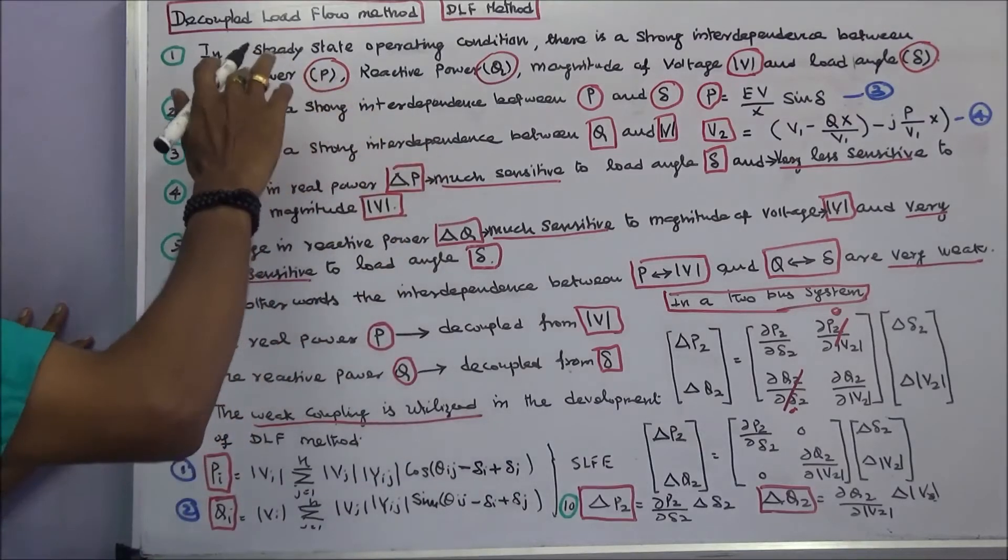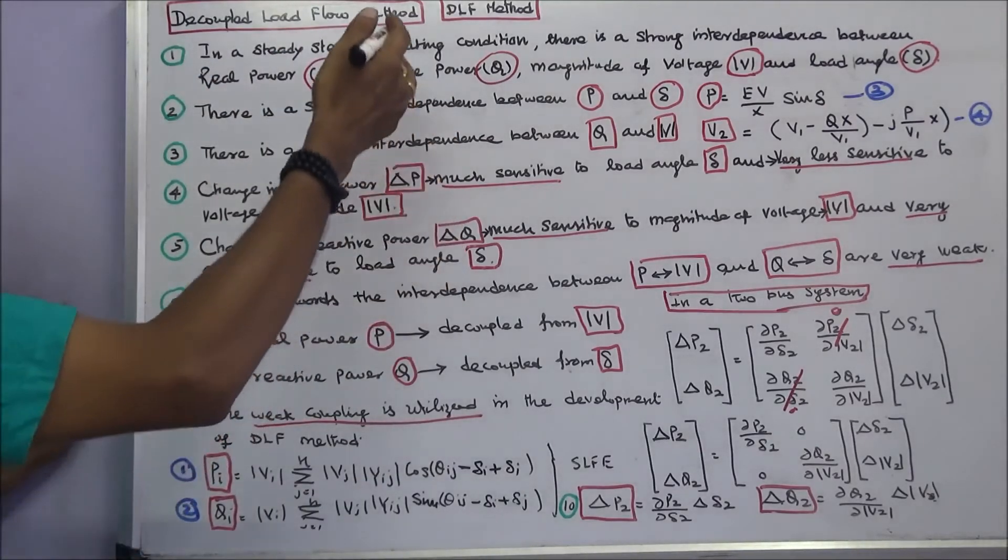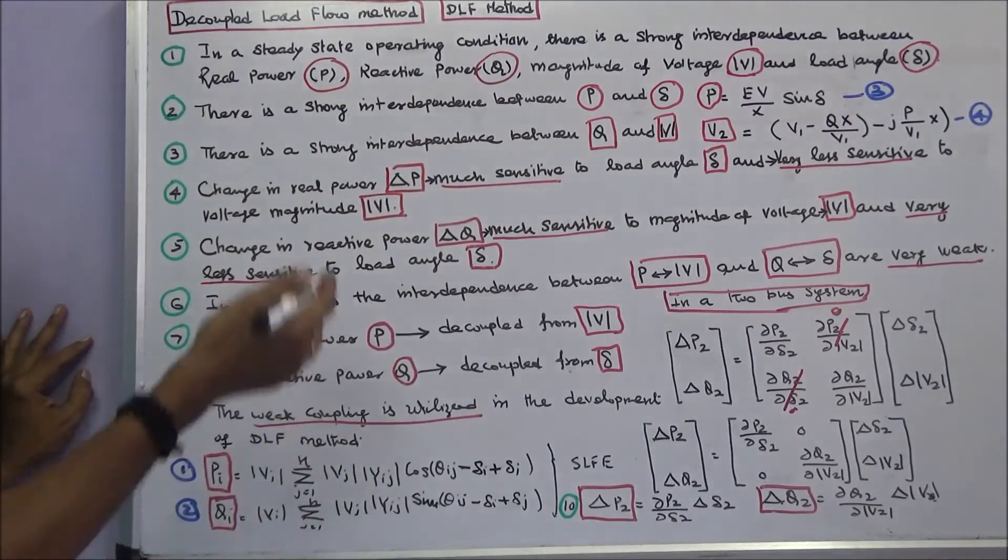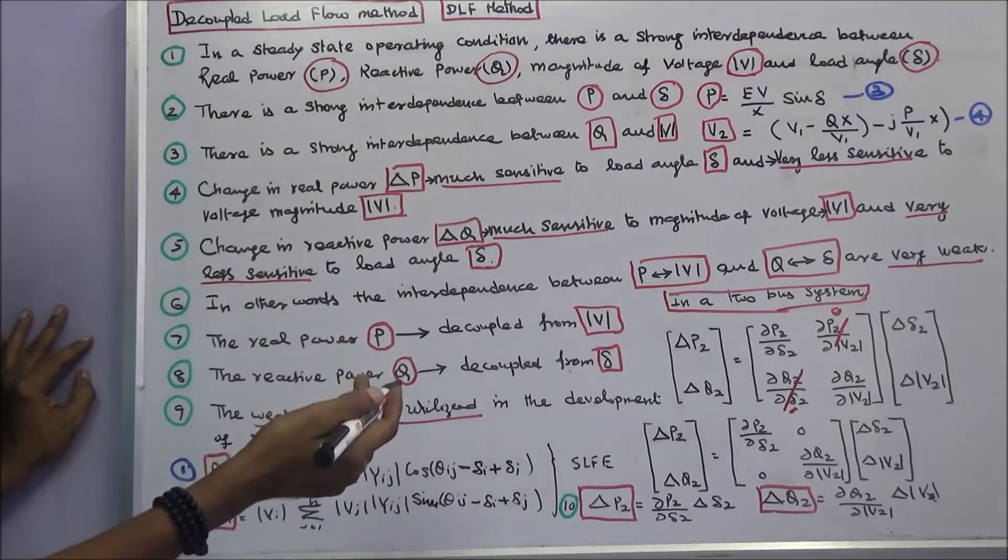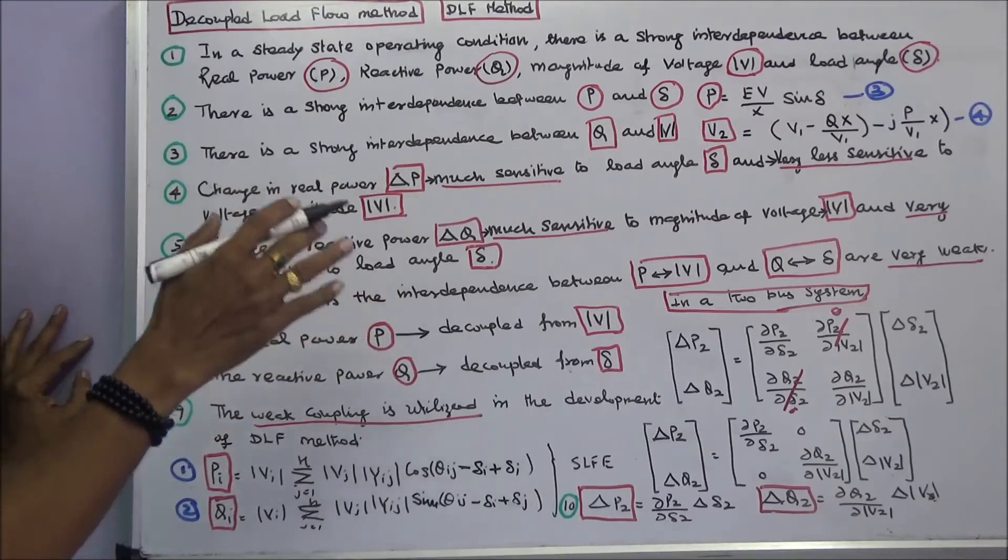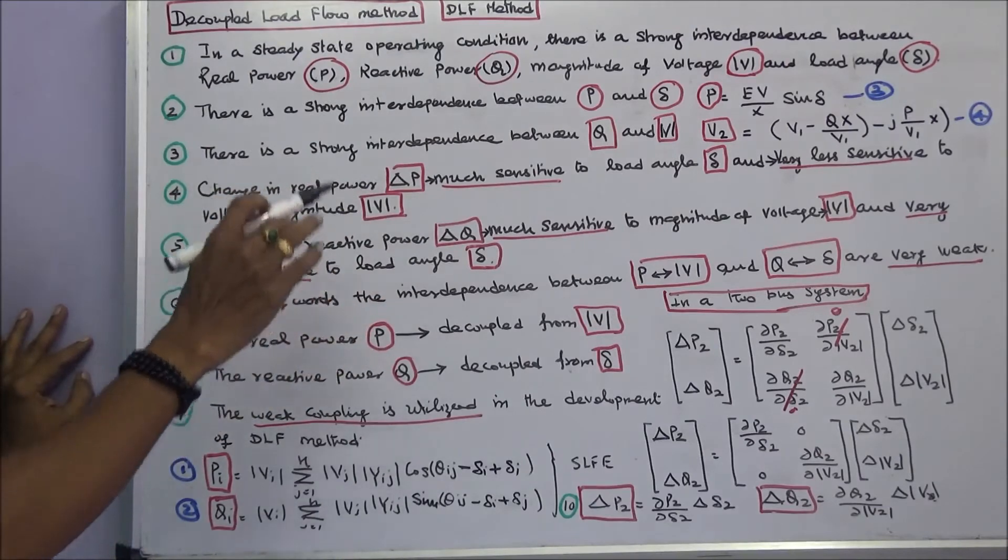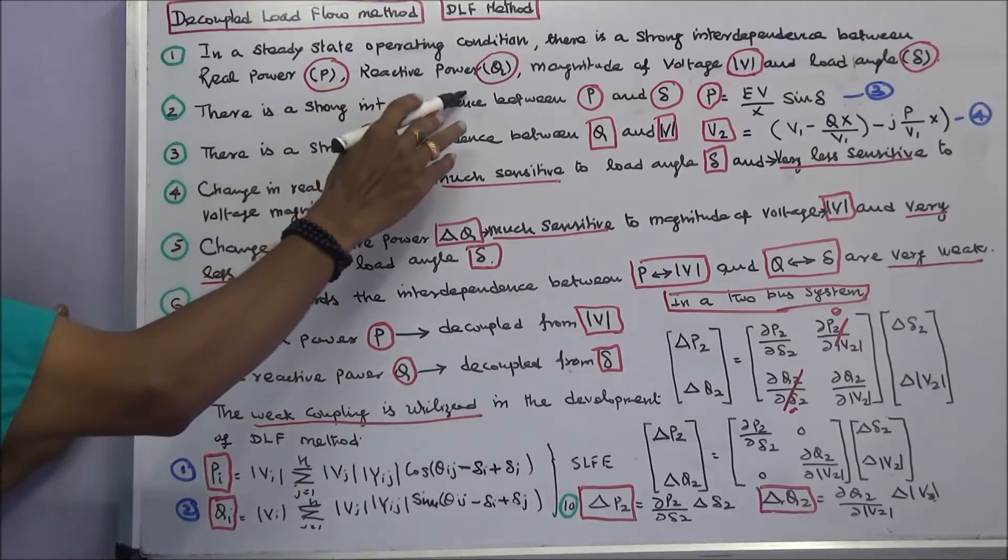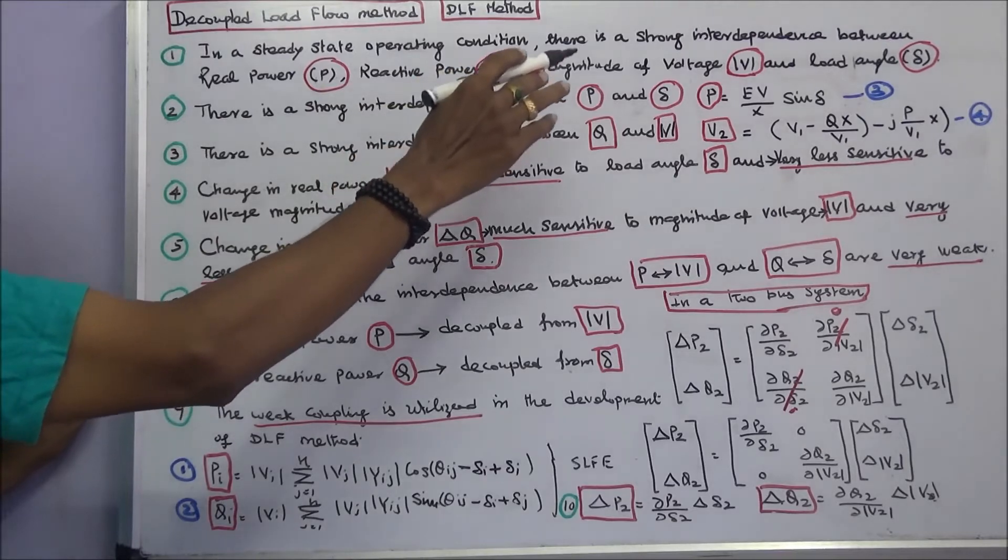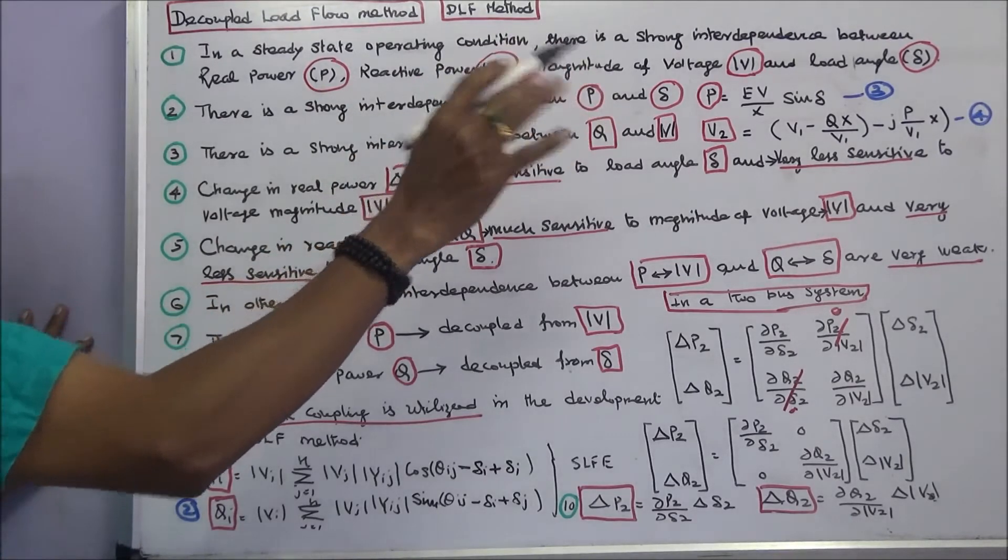This class we discuss the decoupled load flow method or DLF method. In a steady state operating condition, there is a strong interdependence between real power P, reactive power Q, magnitude of voltage modulus of V, and load angle delta.